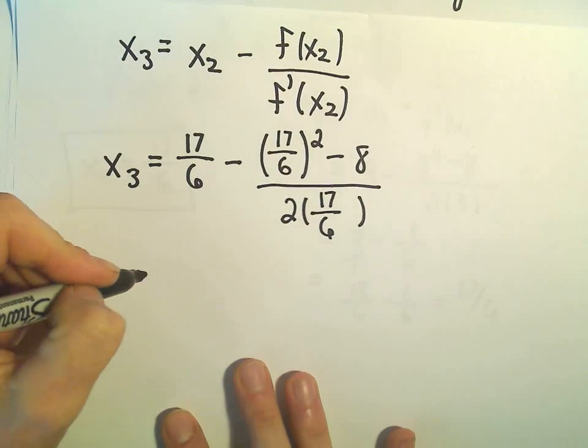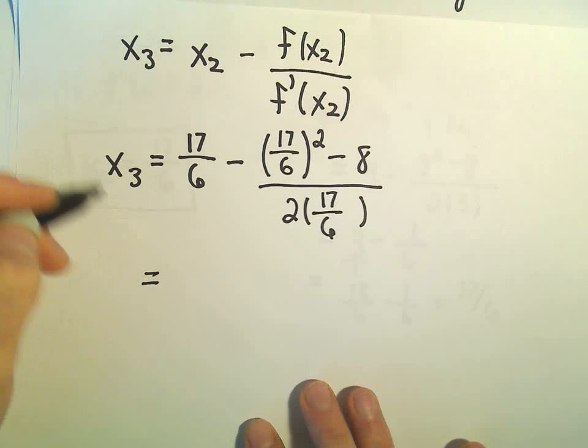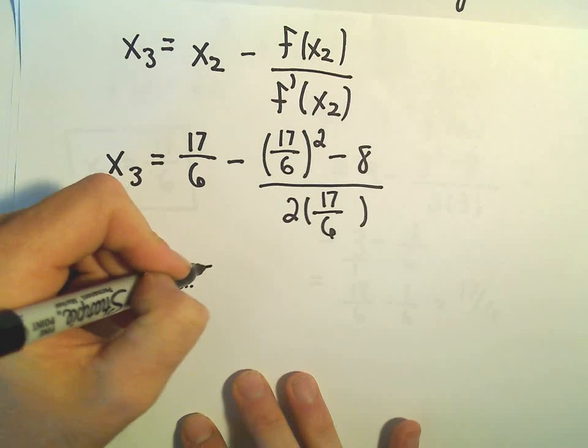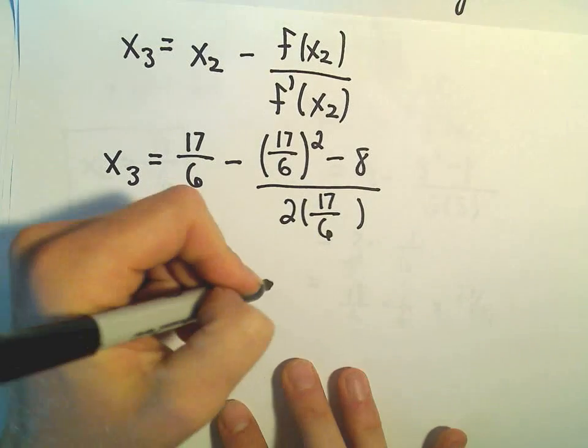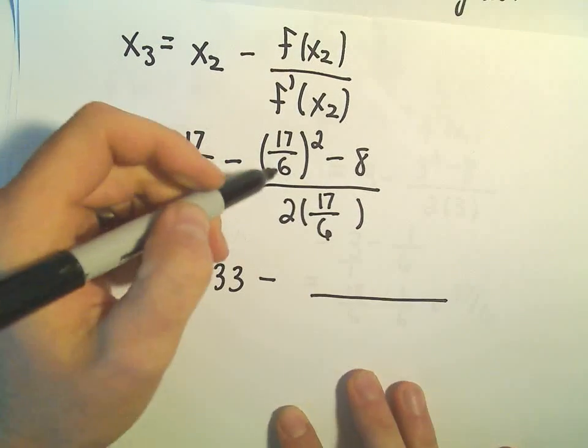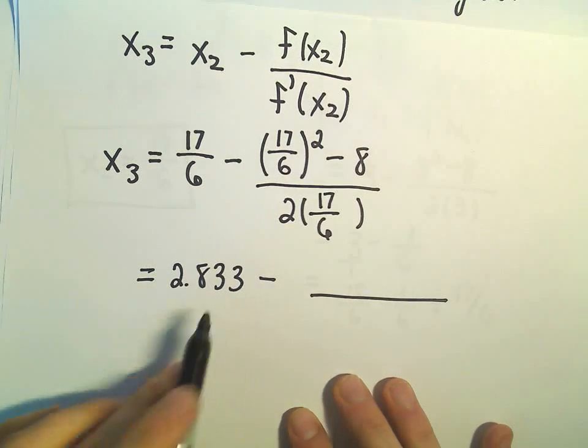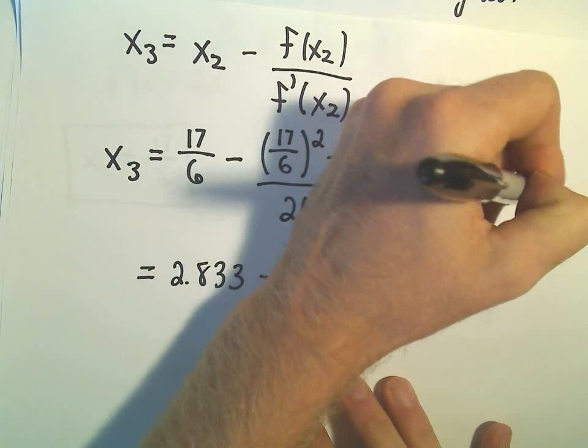And now, again, we could just simplify this down. So now I am, since this is my last one, I think I am going to start approximating. You know, if you approximate over and over and over and over, obviously you're going to accumulate some roundoff error. So just something to be aware of. So let's see. 17 over 6, I'm going to approximate that with 2.833.